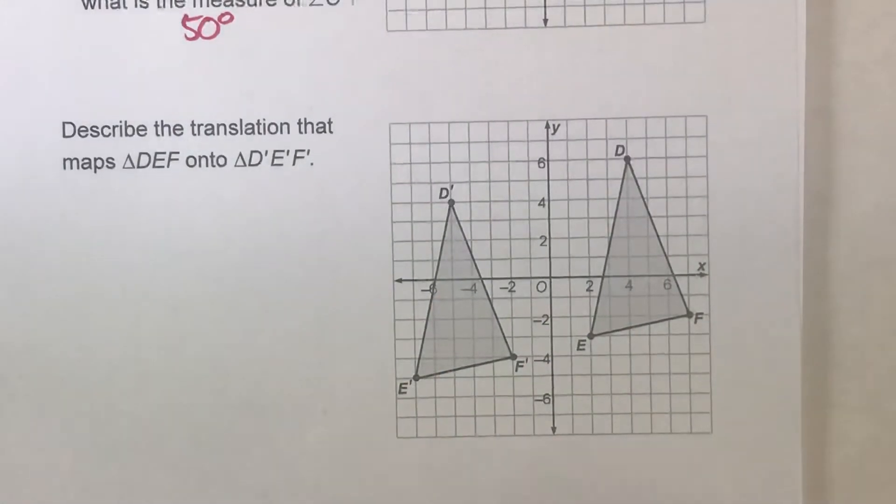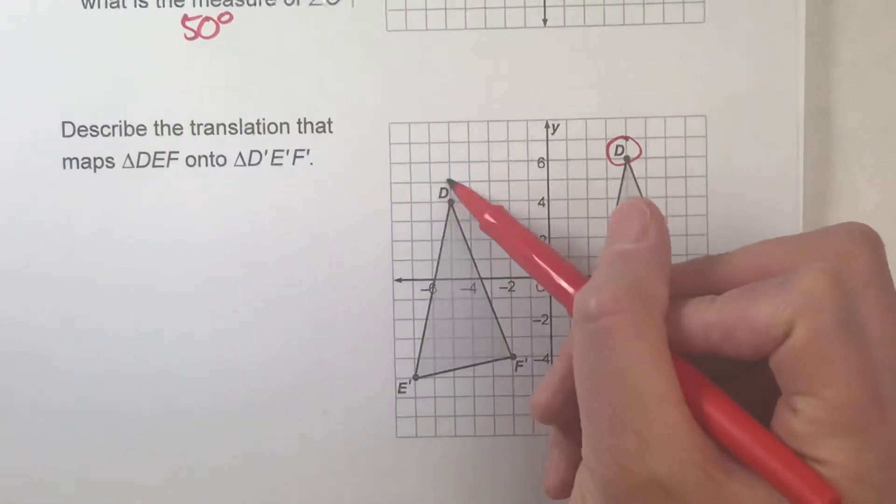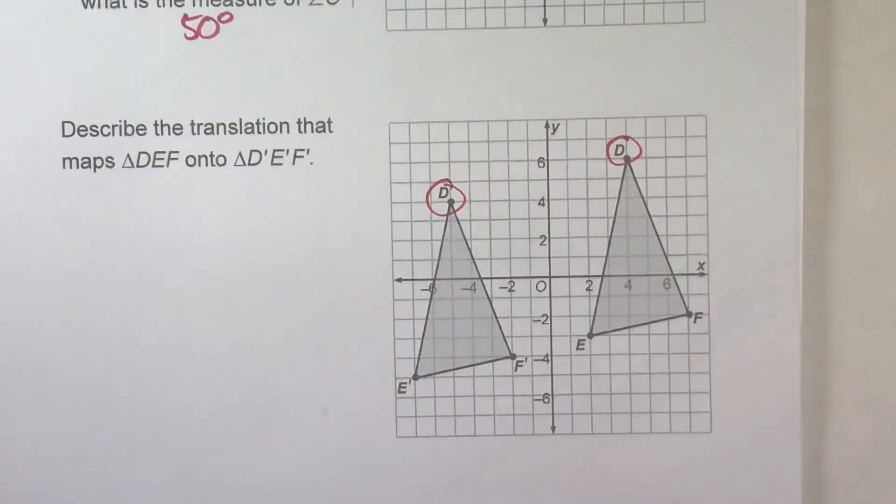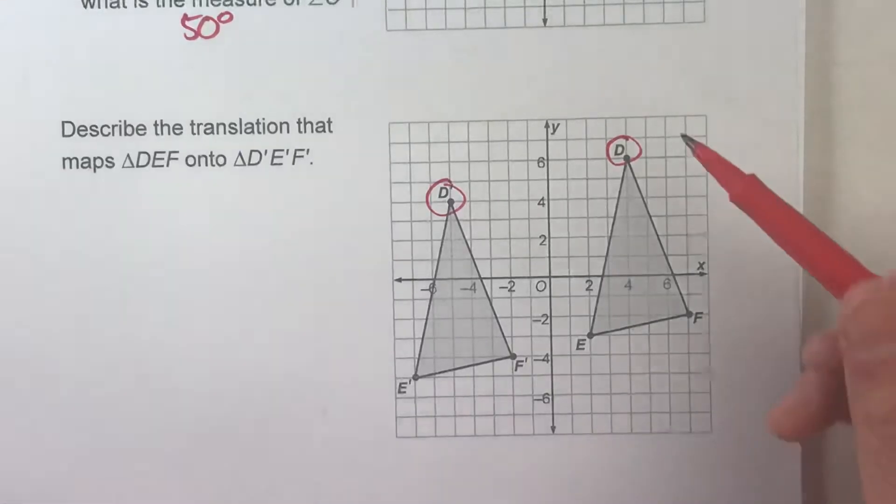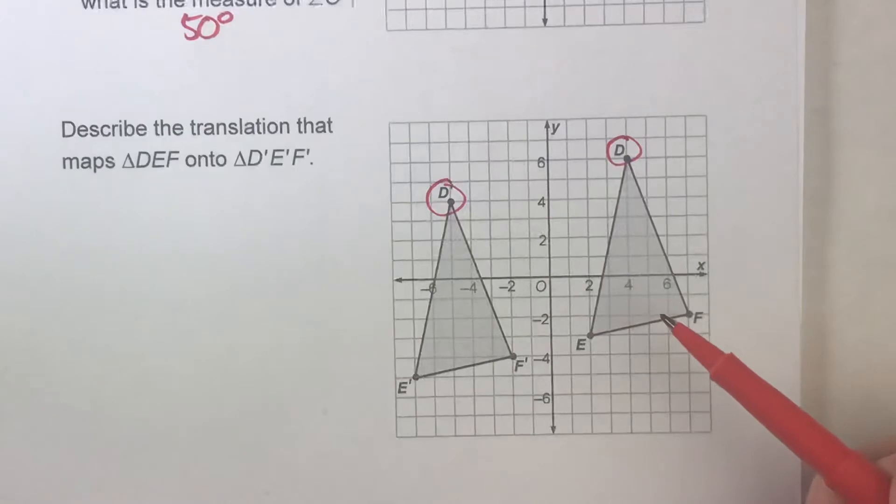Now the first thing you have to pay attention to is the fact that one of these points says D, the other one says D prime. So that's how you know which one we started with. So we're starting with D and we're sliding it over to D prime.